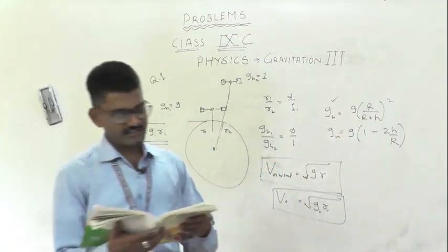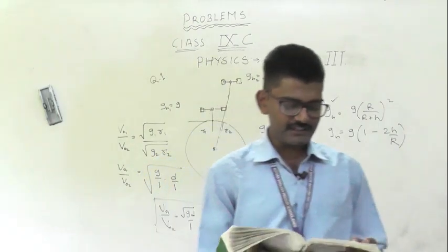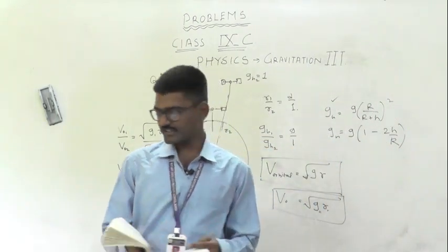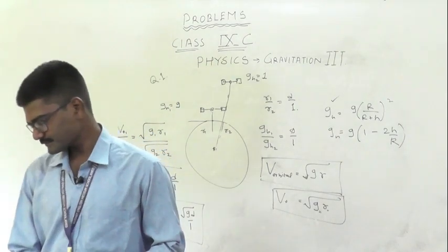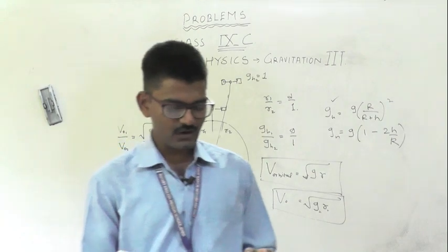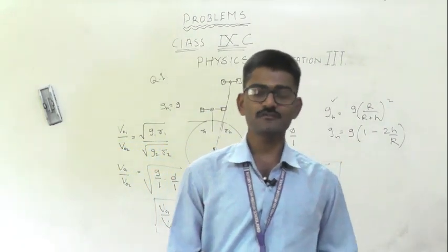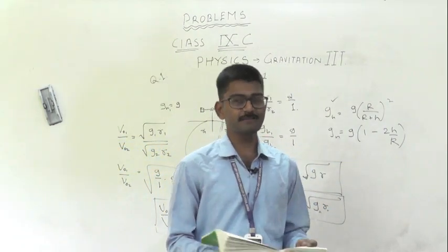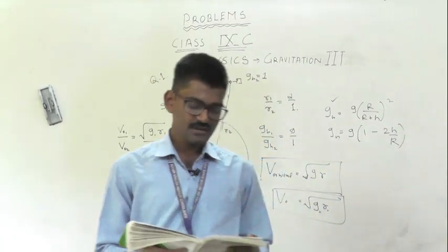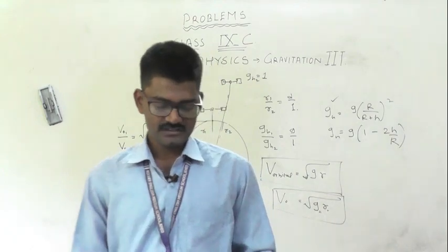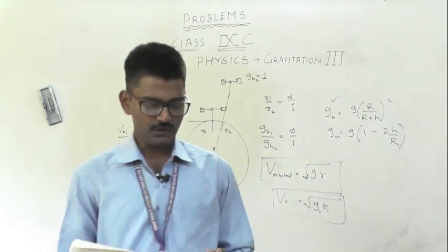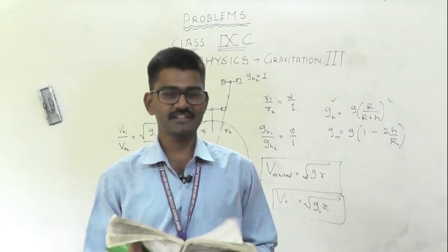Now we will go to the next question. Newton's inverse square law is deduced from Kepler's third law of planetary motion — T squared is directly proportional to R cubed. Newton's inverse square law was derived from this Kepler's third law. Now we will go on to the next question.